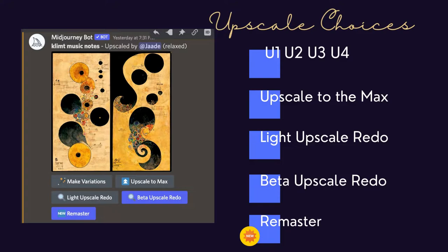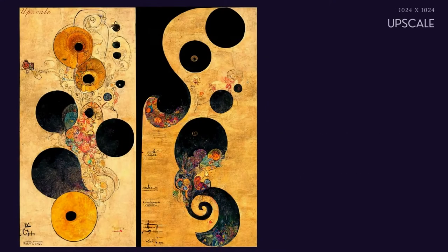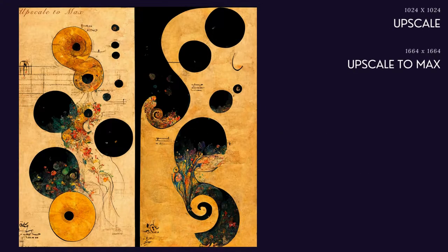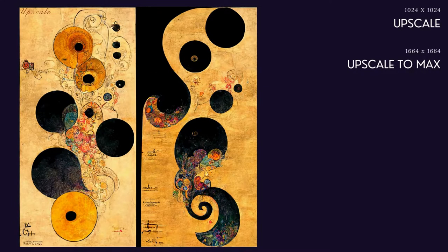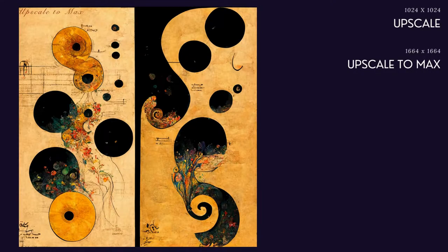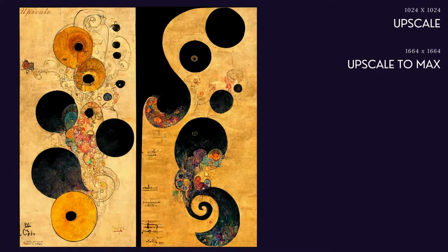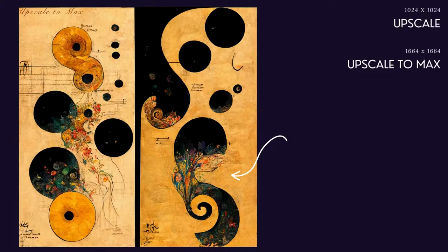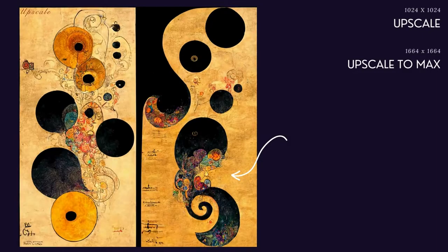Let's start with upscale to max. Just a note that the upscale to max only works in fast mode. Right away, you'll start to notice variations in your image. The main shapes stay the same, but the details change. In this image, the flower detail changes as well as the overall texture.